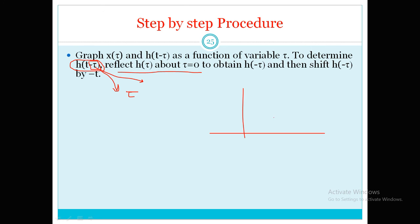For example, if this is τ and this is my signal, I need to represent it as h(−τ). About τ = 0, I represent it the other way around — it will look like this. It is simply a reflection at τ = 0.